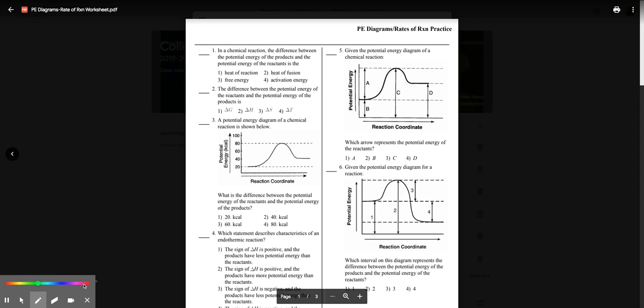Okay, these are some Regents review questions on potential energy diagrams and rates of reaction, so hopefully you looked over the notes for those. In a chemical reaction, the difference between the potential energy of the products and the potential energy of the reactants is...